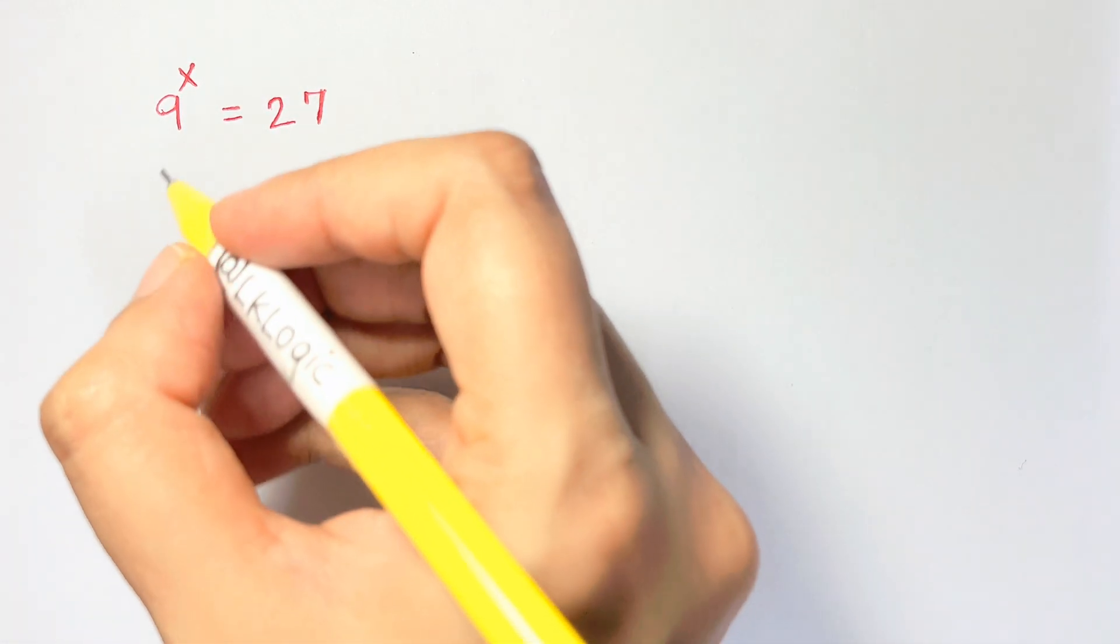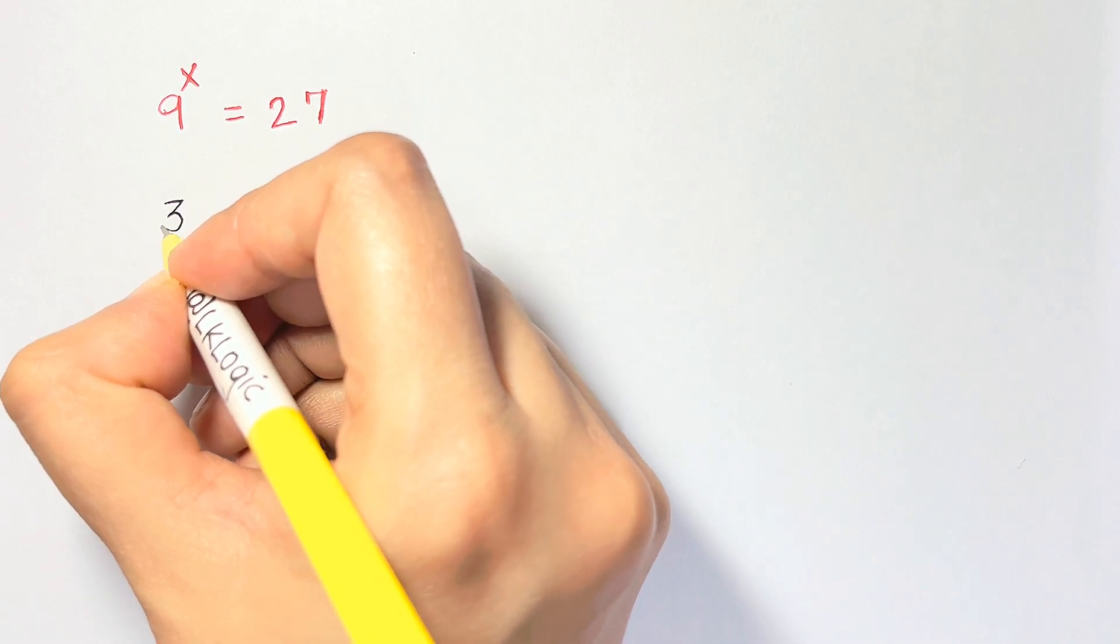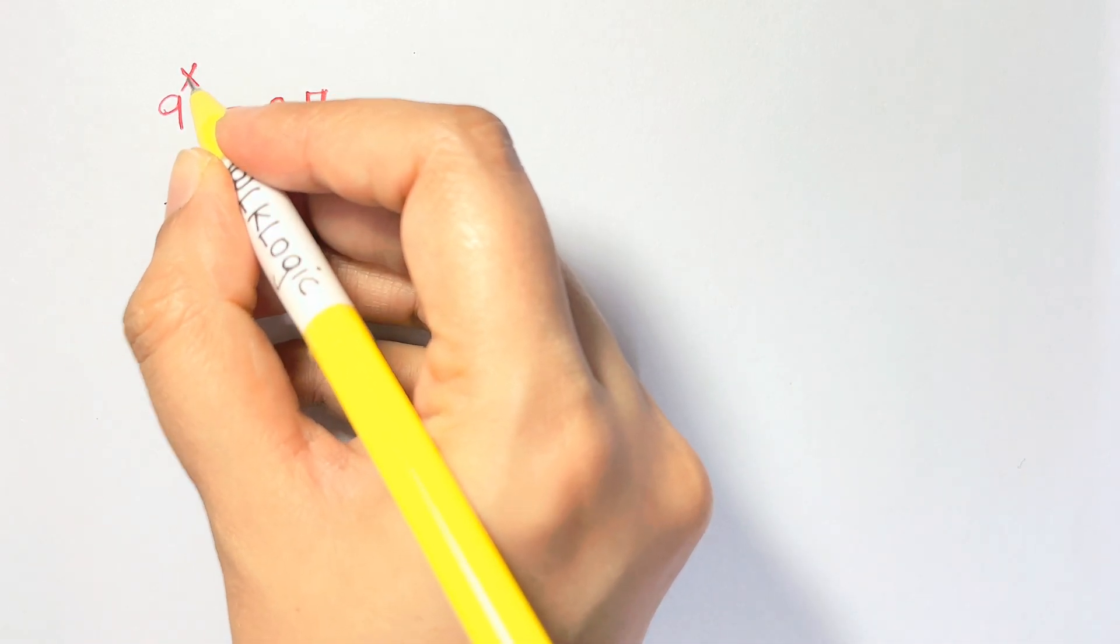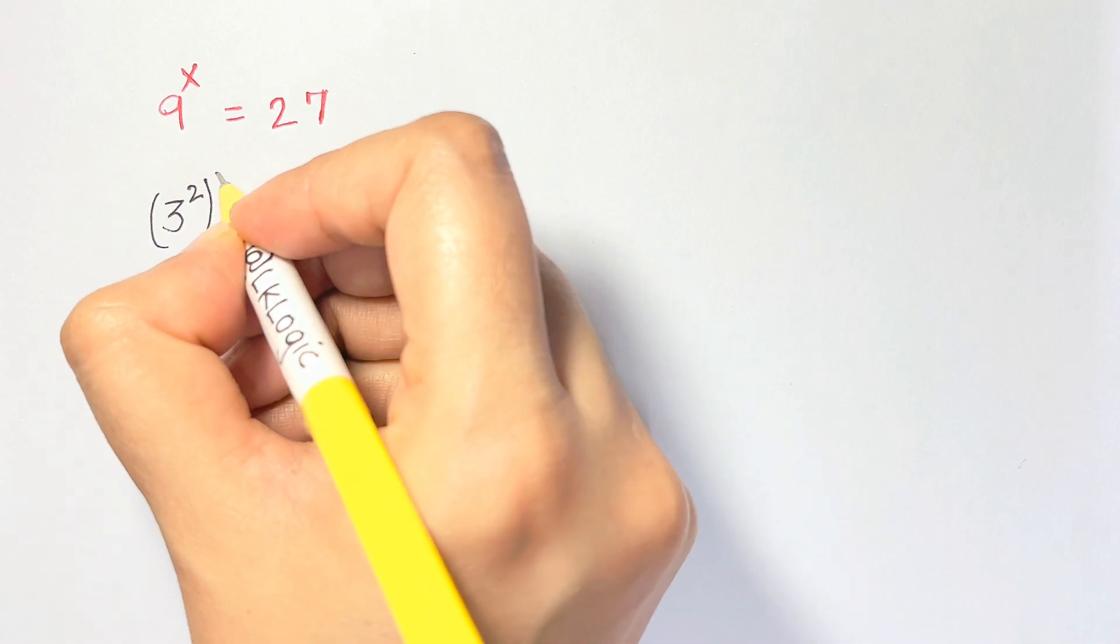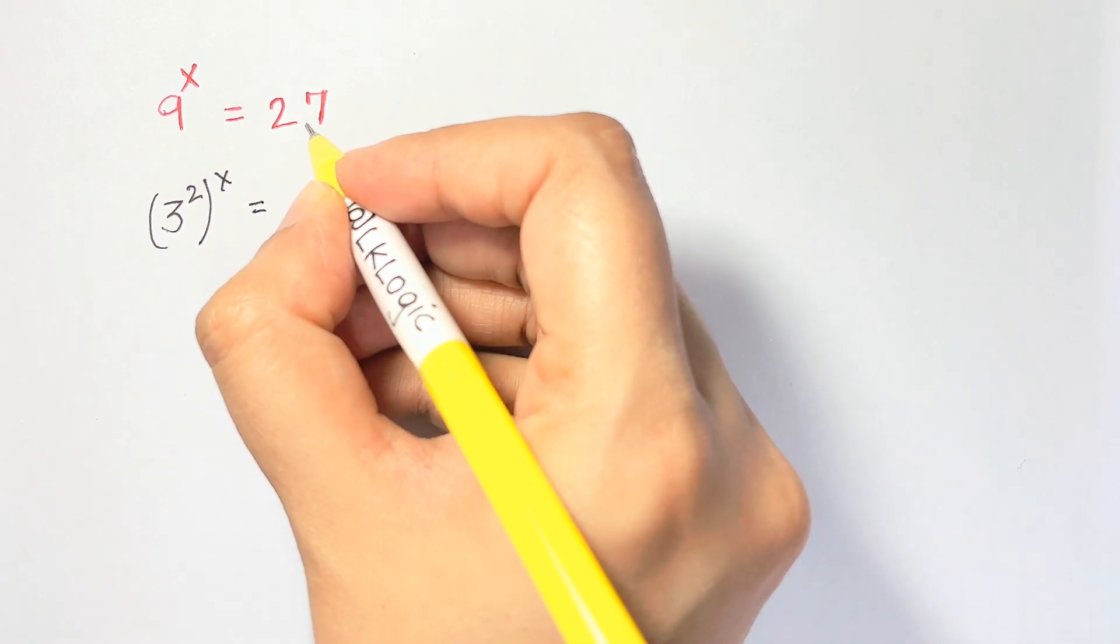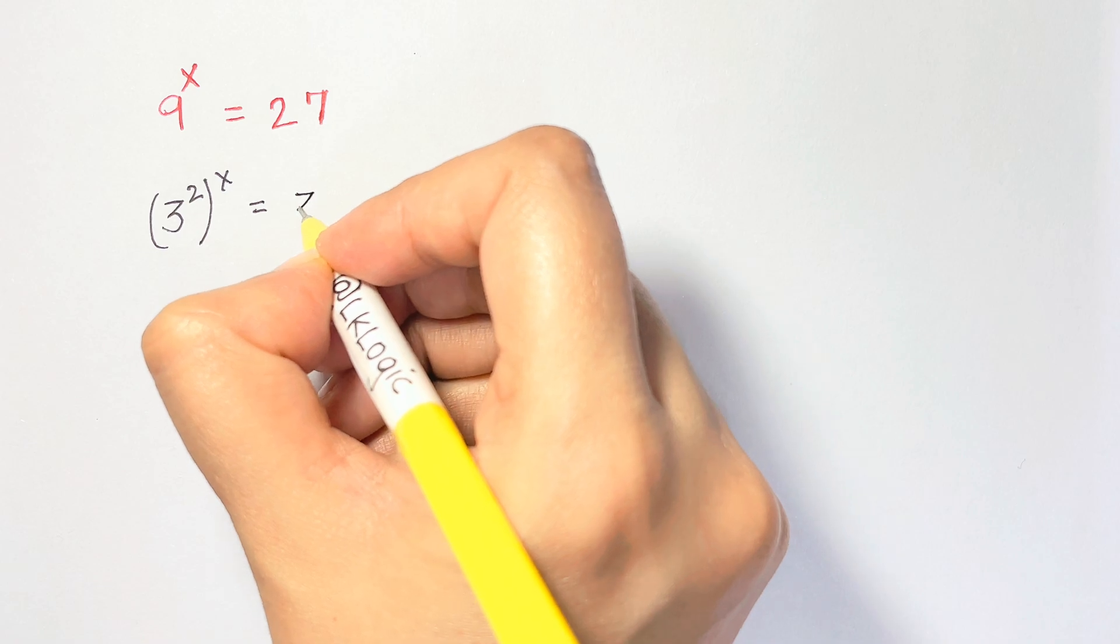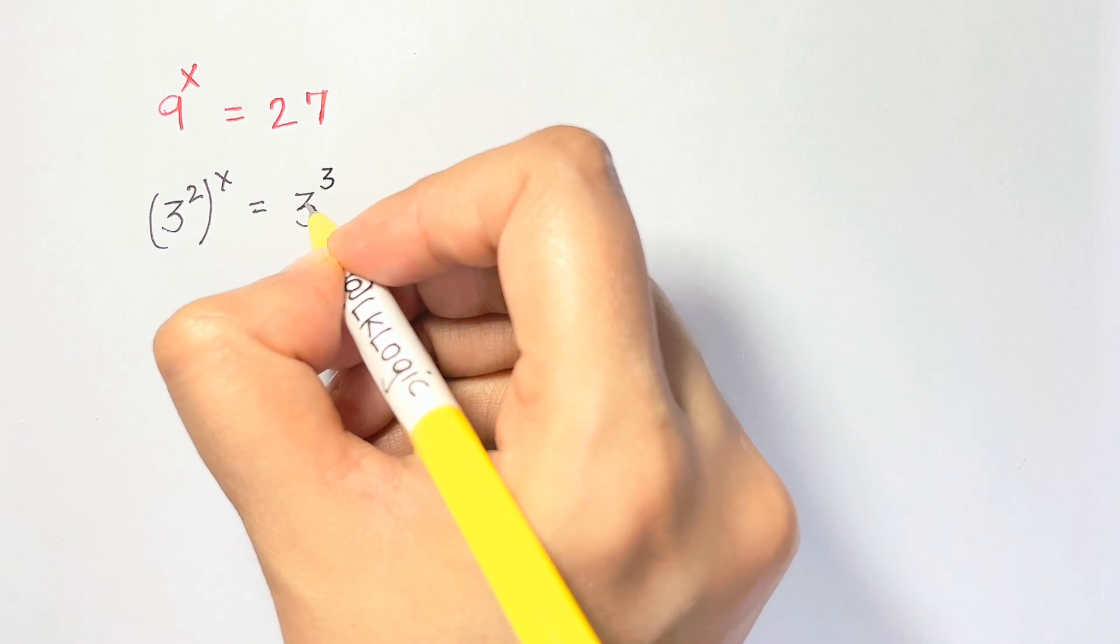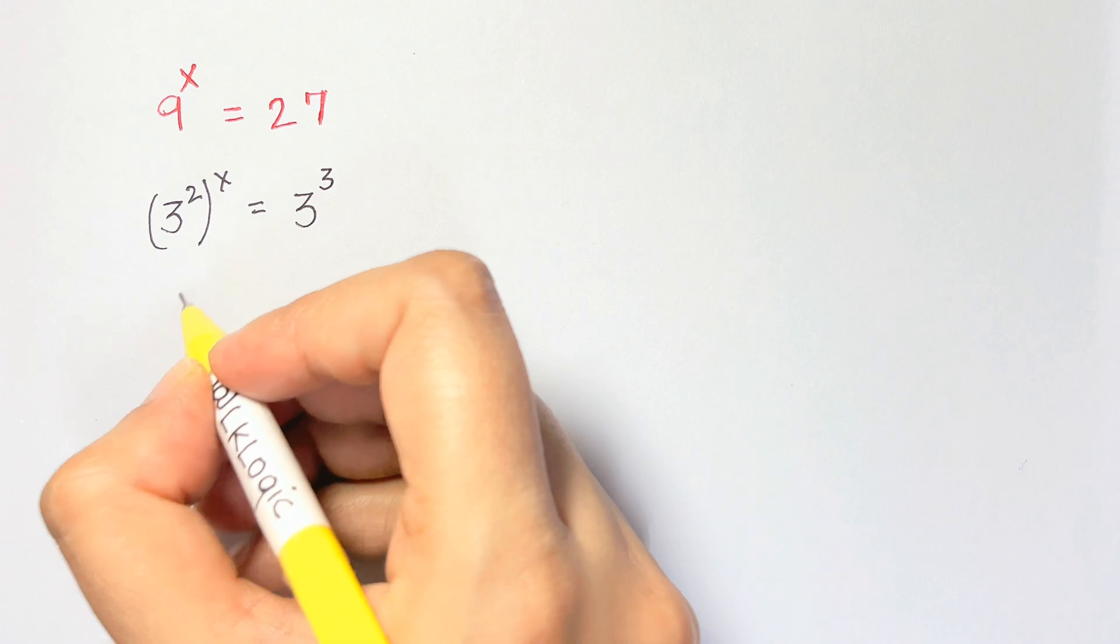So what we can do is, 9 as we know can be written as 3 squared, and you already have the power of x. Let's put it back, which is equal to 27, and 27 can be written as 3 cubed. 3 times 3 times 3 is 27.